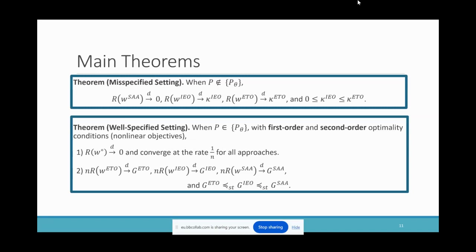Our previous findings are completely reversed when the model is well-specified — this is our main technical contribution. Under mild assumptions such as first-order and second-order optimality conditions, the asymptotic regrets of all three approaches are zero and they all converge at rate 1/n. However, n times the regret converges to a certain limiting distribution for all three approaches — called G_ETO, G_IEO, and G_SAA — and they have the following relation: G_ETO is first-order stochastically dominated by G_IEO, and G_IEO is first-order stochastically dominated by G_SAA.